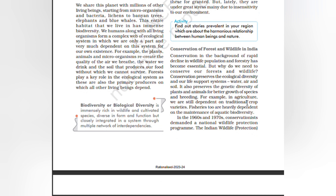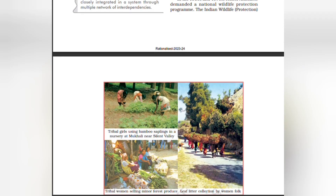For example, in agriculture we are still dependent on traditional crop varieties; fisheries too are heavily dependent on the maintenance of aquatic biodiversity. In the 1960s and 70s, conservationists demanded a national wildlife protection program.